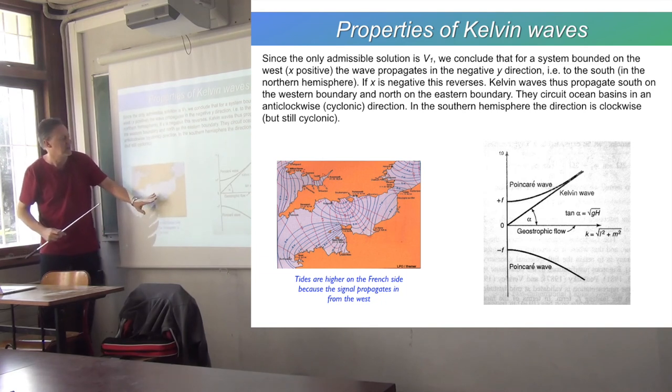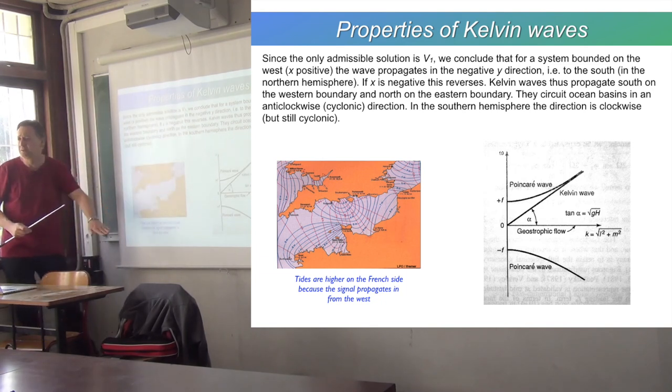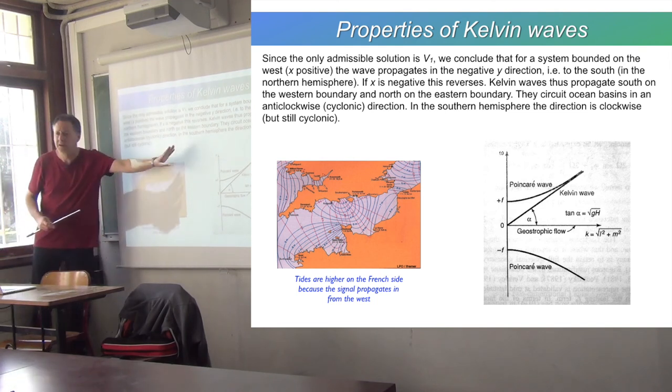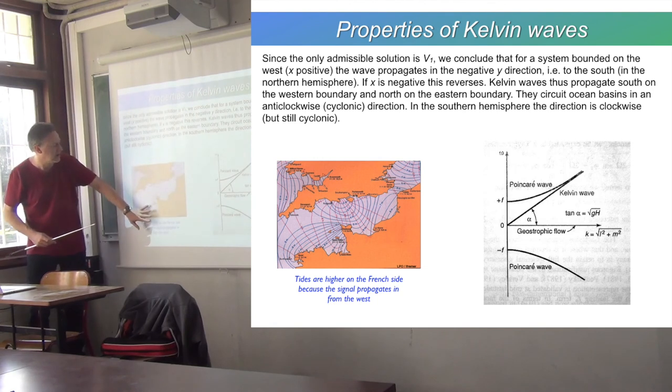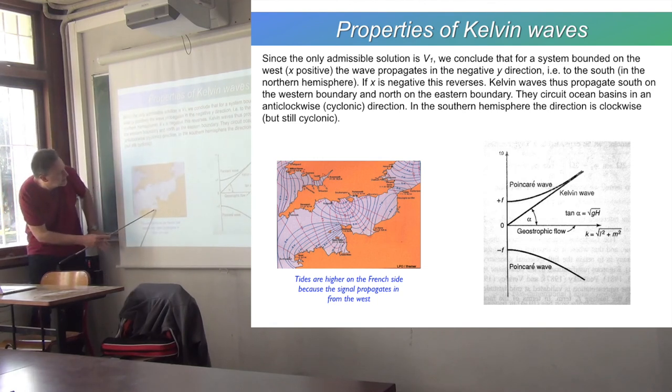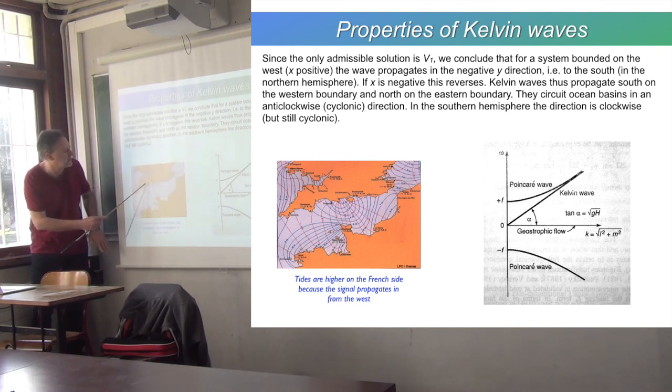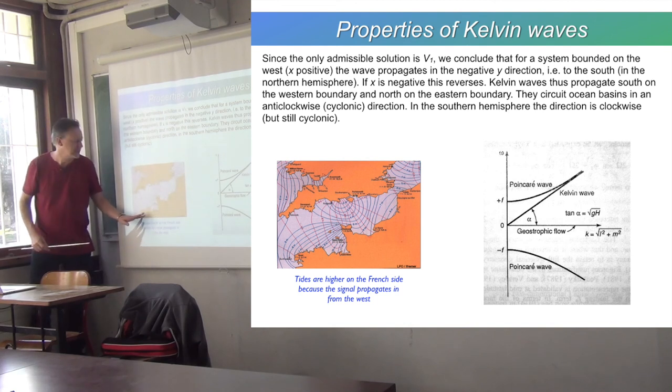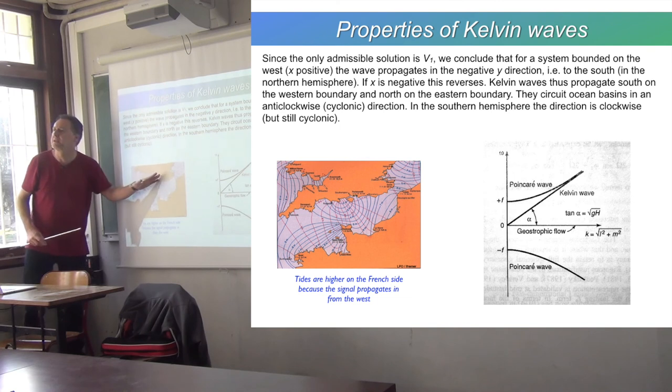So the vertical amplitude of the tide as it comes through the channel is higher on the French side. You can't see it, but this is about 10 metres here on the French side; it's only a few or a couple of metres here on the English side. So Normandy and Brittany have higher tides than southwest England.